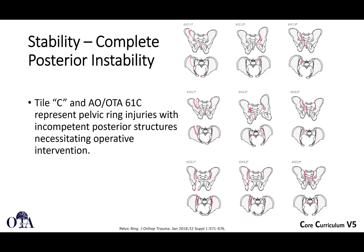Tile Type C fractures are vertically unstable — both rotationally and vertically unstable. This occurs when there is a complete posterior injury, whether a fracture or a complete ligament injury involving both the anterior and posterior sacroiliac ligaments.